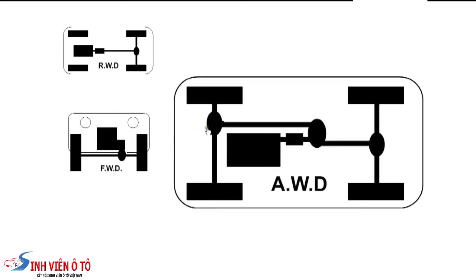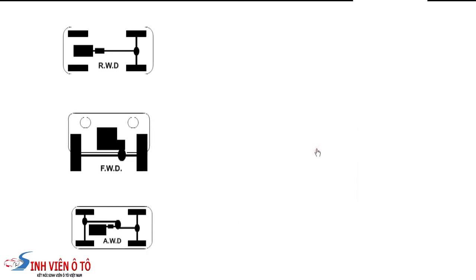With an all-wheel drive car, we normally have three differentials. One in the middle to apportion torque between front and rear, one in the back axle and one in the front axle. Normally, the centre diff is a viscous coupling.